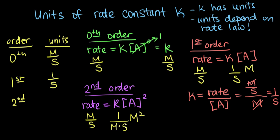So the units of k for a second order reaction are 1 over molar·seconds. These are the three most common reaction orders you might see in chemistry class. Sometimes you have reactions that aren't zeroth, first, or second order — and whenever that happens, you can always use the rate law to find the units of the rate constant k.